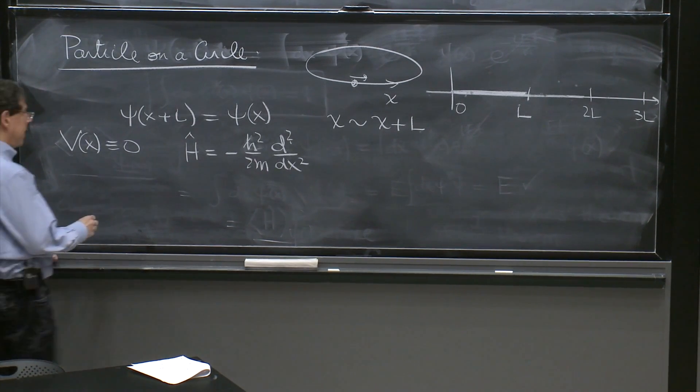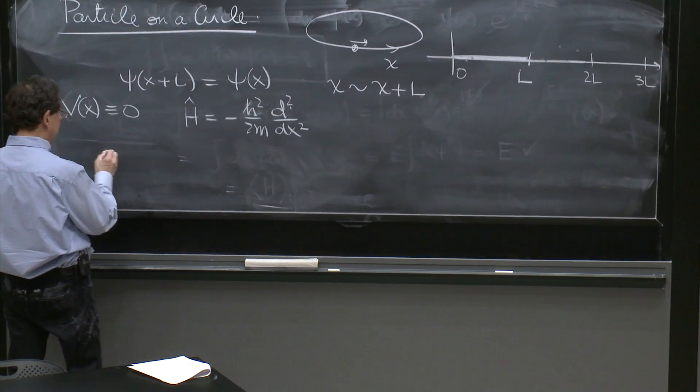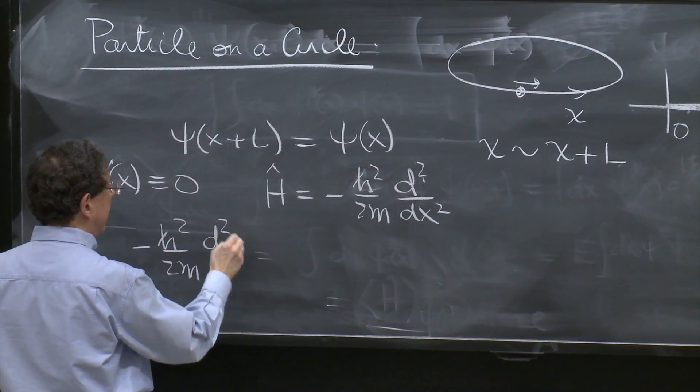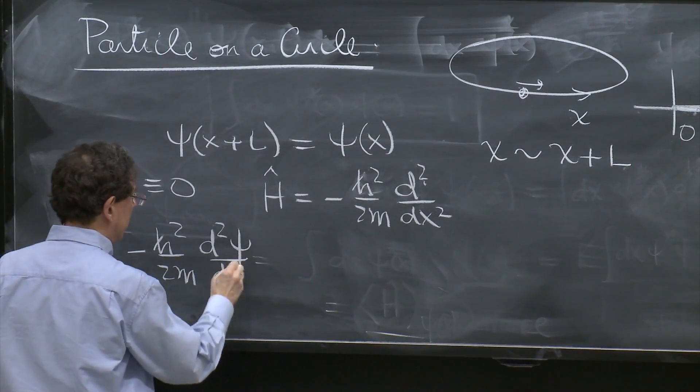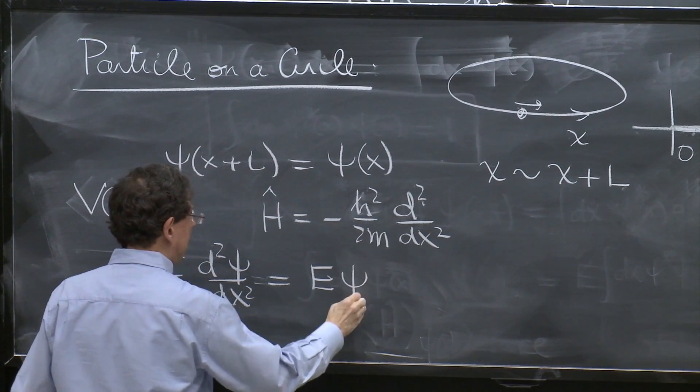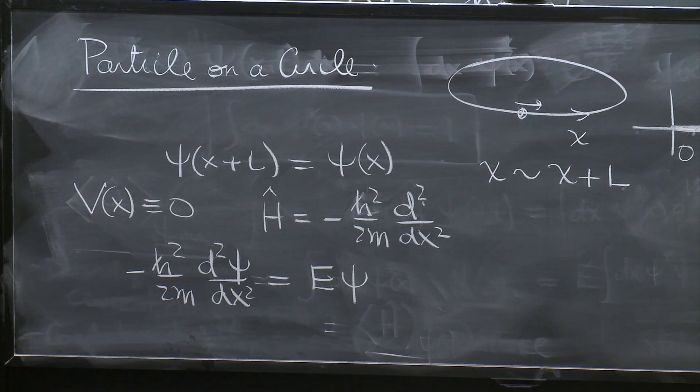We want to find the energy eigenstates, so we want to find minus ℏ squared over 2m d second ψ dx squared is equal to E ψ. We want to find those solutions.